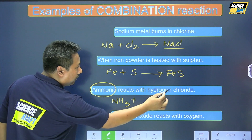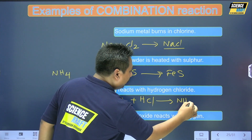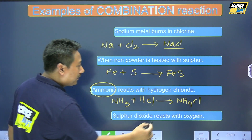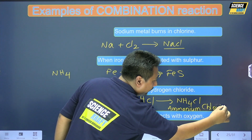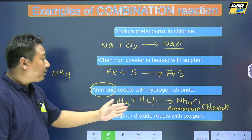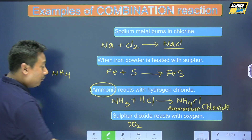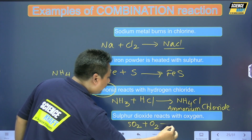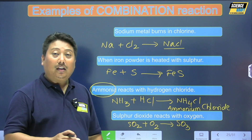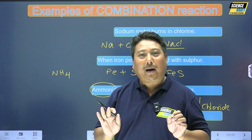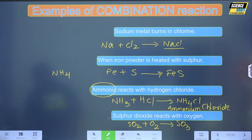Ammonia reacts with hydrogen chloride and also with oxygen to form products including Al2O3. These are further examples of combination reactions involving ammonia.